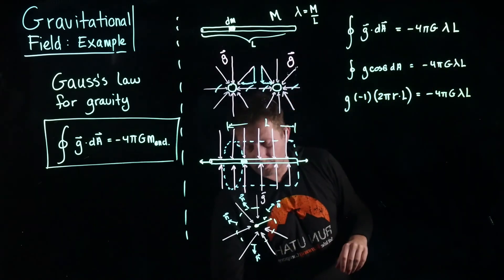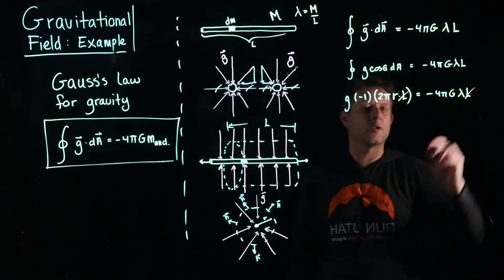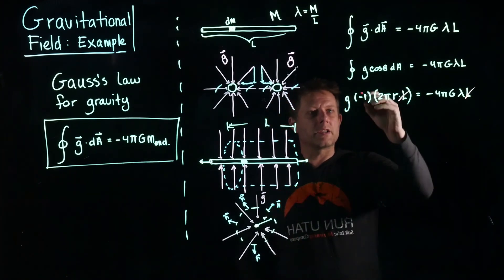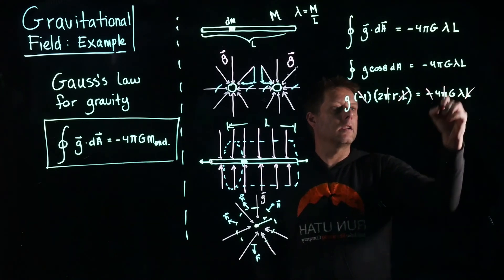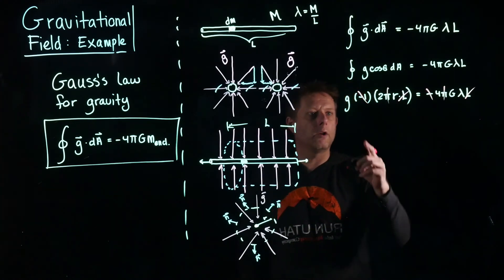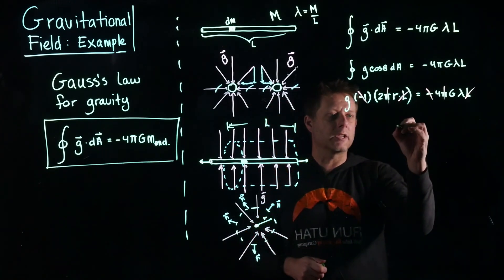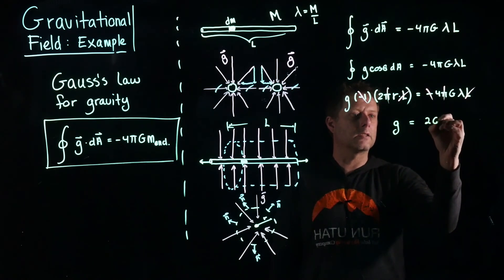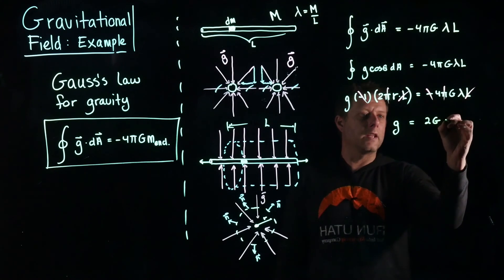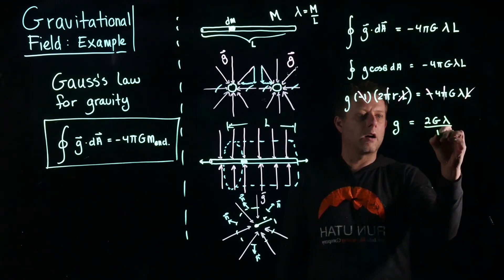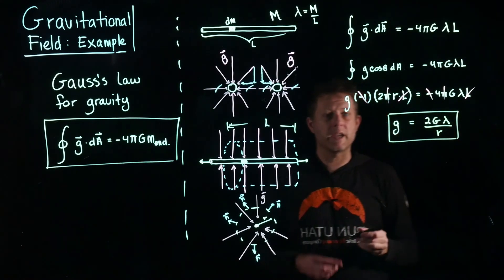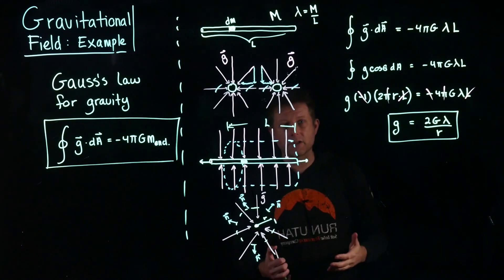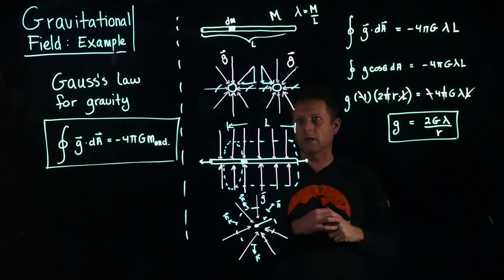This is why we express the mass in terms of the mass density — because now we can cancel the length L from both sides, so the result does not depend on how long the cylinder is. The only requirement is that we can ignore the end effects. We also notice that the negatives cancel, a factor of pi divides out, and we have 2 divided by 4, divided by r. Solving for the magnitude of the gravitational field gives us 2G times the linear mass density divided by r. That is the magnitude of the gravitational field as we move away from the line mass.